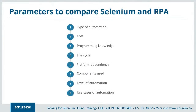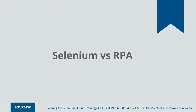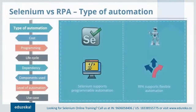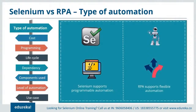Now let's look at the parameters for comparing these two automation technologies: type of automation, cost, programming knowledge required, lifecycle, platform dependency, components used, level of automation, and use case. Starting with type of automation: Selenium supports programmable automation, where the sequence of any operation can be changed based on user requirements. RPA supports flexible automation, which is a hybrid of fixed and programmable automation.